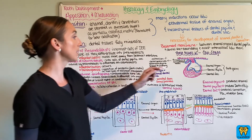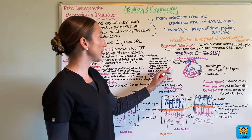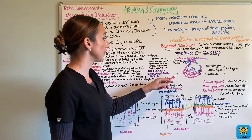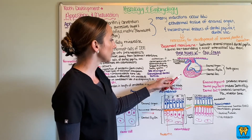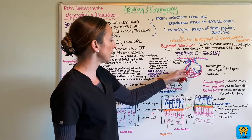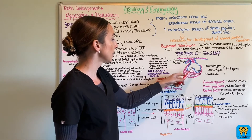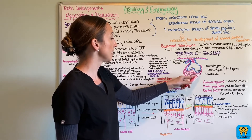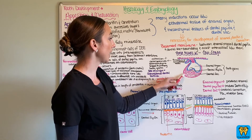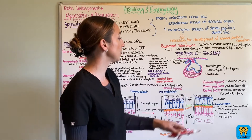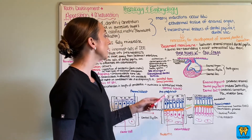So over here we have a picture where you can see the enamel organ right here, your dental papilla, and then the dental sac. This is going to be your tooth germ.